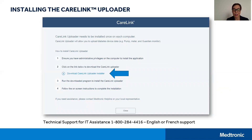You'll be prompted through the process on your screen, but if ever you have any issues or run into any roadblocks, you can always call Product Support for Technical Assistance at 1-800-284-4416. Support is available 24 hours a day, seven days a week. Our team is there to help and will walk you through any problems you might encounter.